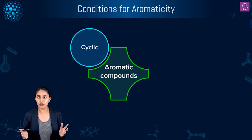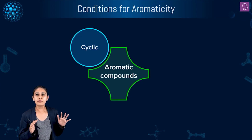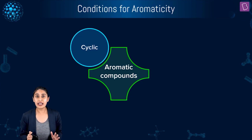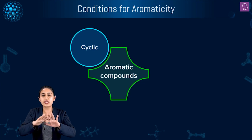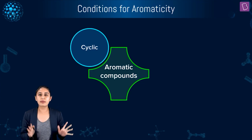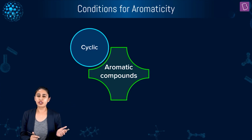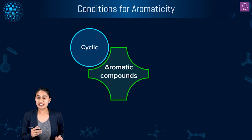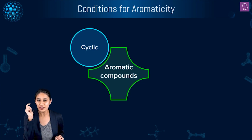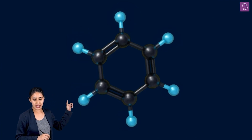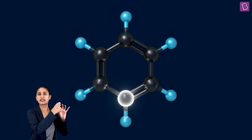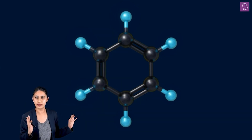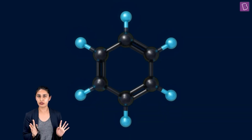The first very important condition, which you'll notice in the very definition of aromatic compounds, is that it has to be cyclic. Let's set our base with benzene — the famous aromatic compound. Benzene is of course cyclic. If you start from one carbon, you reach back the same carbon, so it's a ring. First condition: for a compound to be aromatic, it has to be a cyclic compound.